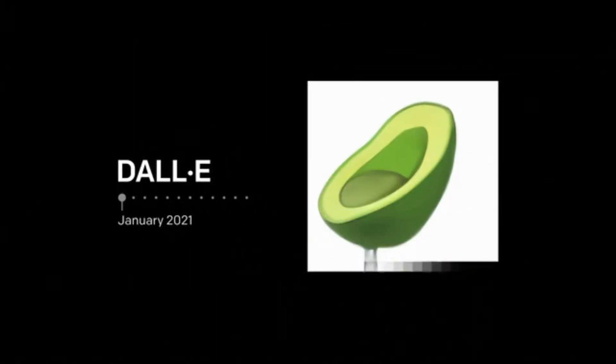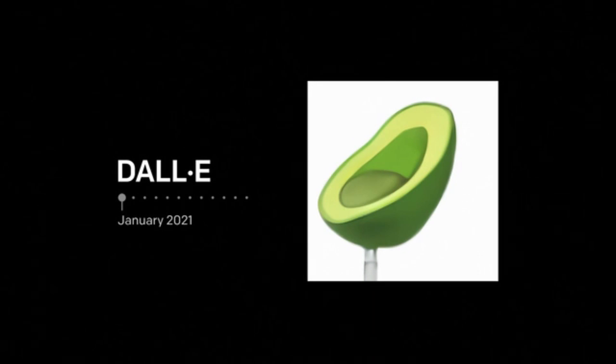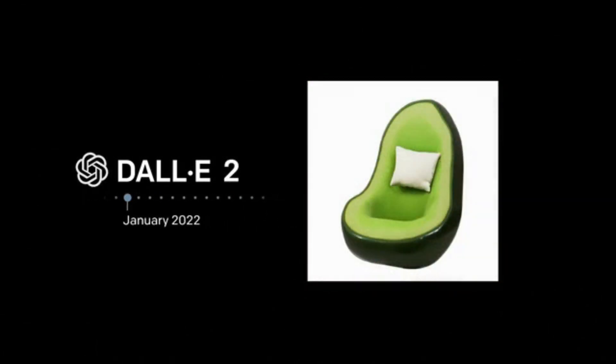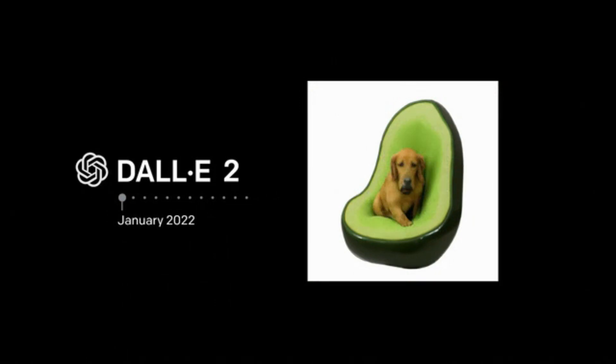In January 2021, OpenAI introduced DALL-E, a system that could generate images from text. DALL-E 2 takes the technology even further with higher resolution, greater comprehension, and new capabilities like InPainting.